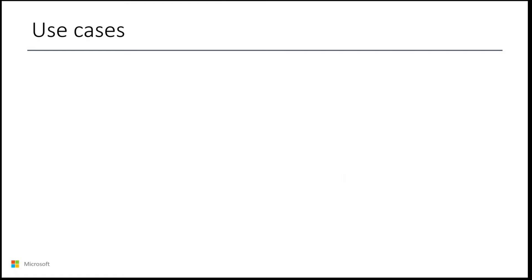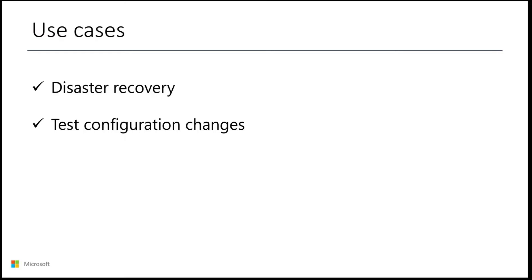Here are some of the use cases where this topology comes in very useful. First, disaster recovery scenarios when your primary server fails, so you can immediately fail over to one of the staging servers. Second, when testing a new configuration, you can use a staging server to preview changes and make any necessary adjustments. And finally, you can use this method to safely upgrade to a newer version of the sync tool and again use the ability to preview and document changes.